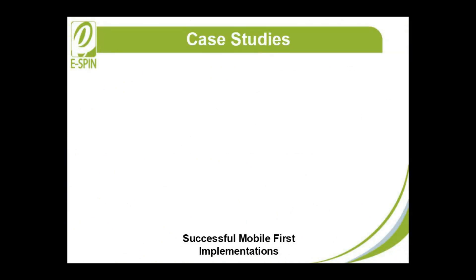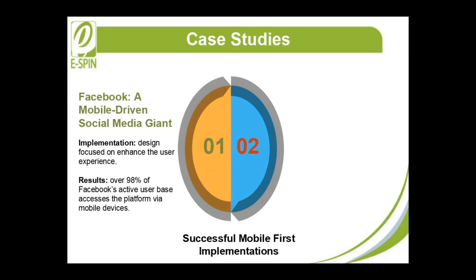Case Studies: Successful Mobile First Implementations. To illustrate the effectiveness of Mobile First, let's explore a few case studies of companies that have successfully implemented this strategy. Facebook, a mobile-driven social media giant and one of the largest social media platforms in the world, focused their design on enhancing user experience by prioritizing essential features and simplifying navigation on smaller screens for fast loading times, even on slower networks, which was crucial for maintaining user engagement. As of 2024, over 98% of Facebook's active user base accesses the platform via mobile devices, showcasing the effectiveness of their mobile-first approach.